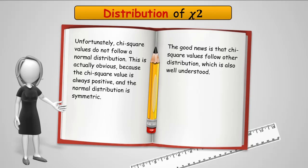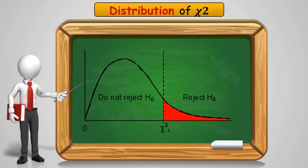Unfortunately, the chi-square values do not follow a normal distribution. This is actually because the chi-square value is, by definition, always positive, and the normal distribution is symmetric on both sides of the mean. The good news is, however, that the chi-square uses another distribution, which is well understood. As you look at that distribution, hopefully that looks familiar, very similar to the f-distribution.